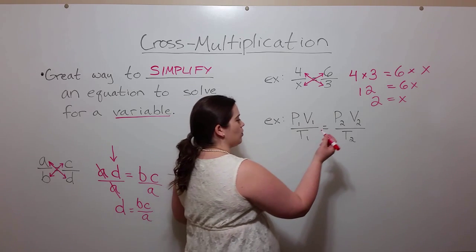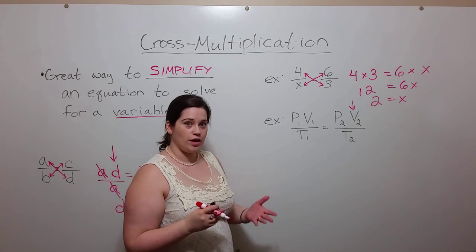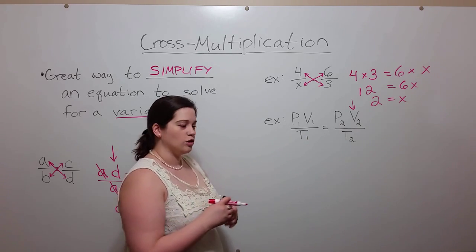So if you were given a problem like that and asked to solve for the new volume of the gas, V2, just use cross multiplication.